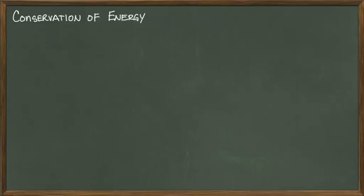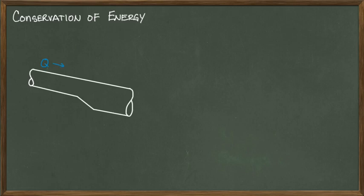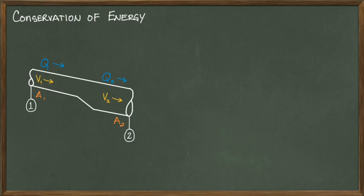By now you've seen this sketch of a generic pipe with a constant flow rate passing through it. I want to use it again to discuss how you apply the law of conservation of energy to a water system. If energy is conserved in a closed system, then the energy at point 1 is equal to the energy at point 2.